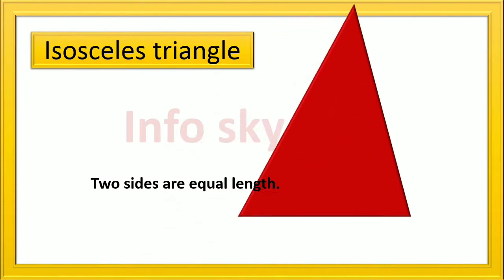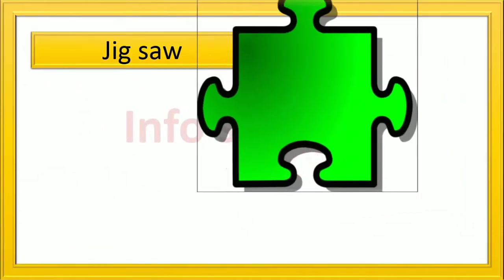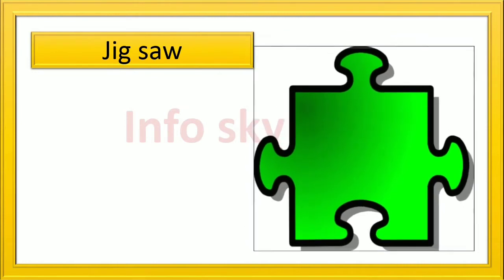Isosceles Triangle: two sides are equal length. Zigzag.